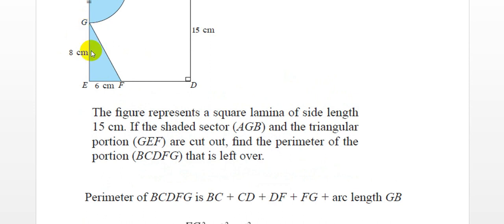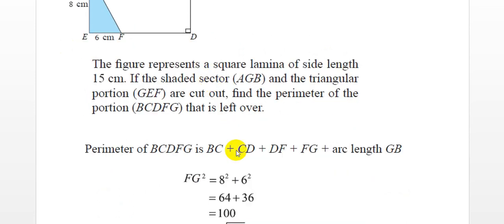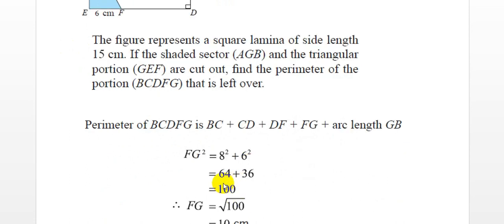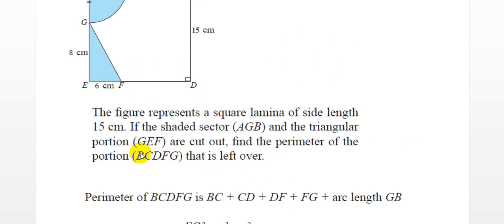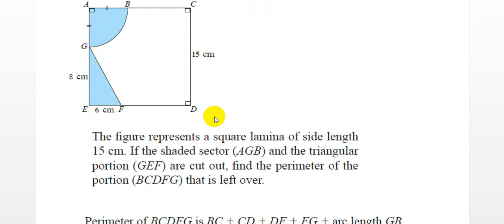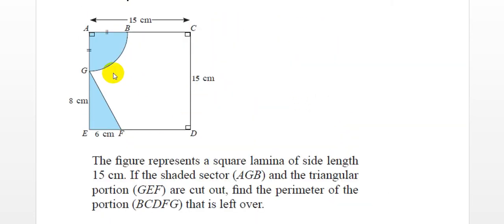Applying the Pythagorean theorem: GF² = GE² + EF² = 8² + 6² = 64 + 36 = 100. Therefore GF² = 100, so GF = √100 = 10 centimeters. That is the length of GF.